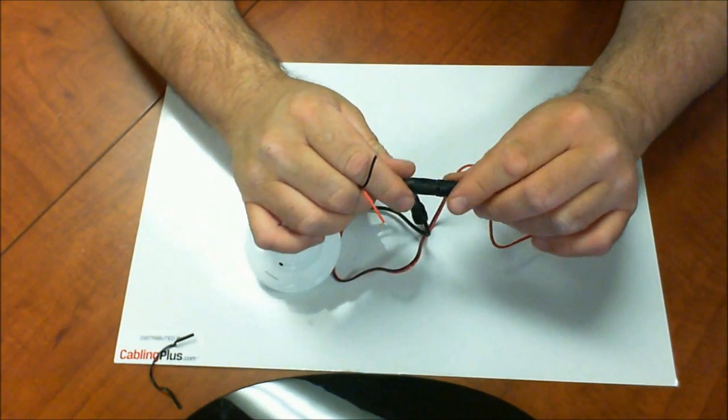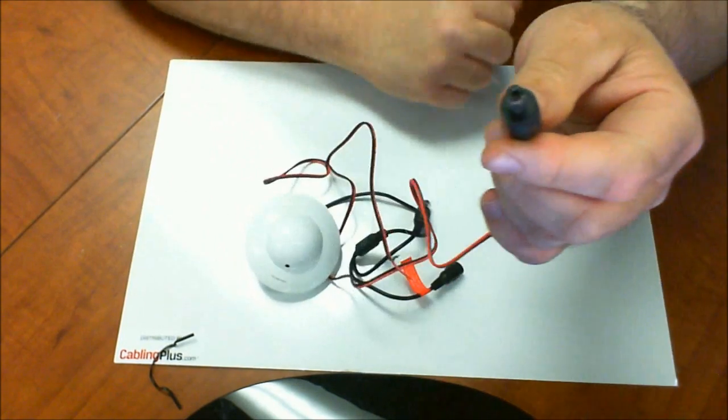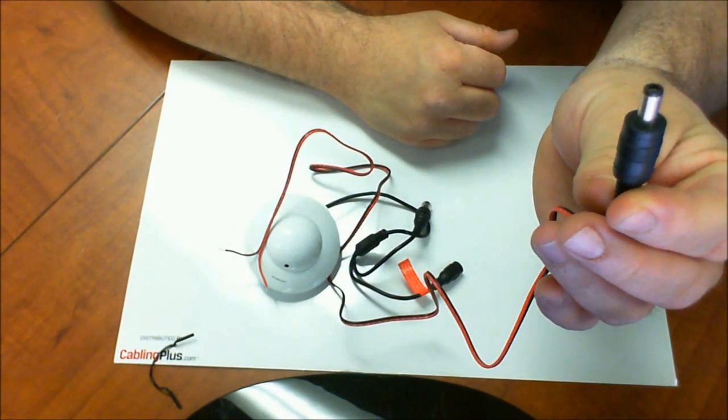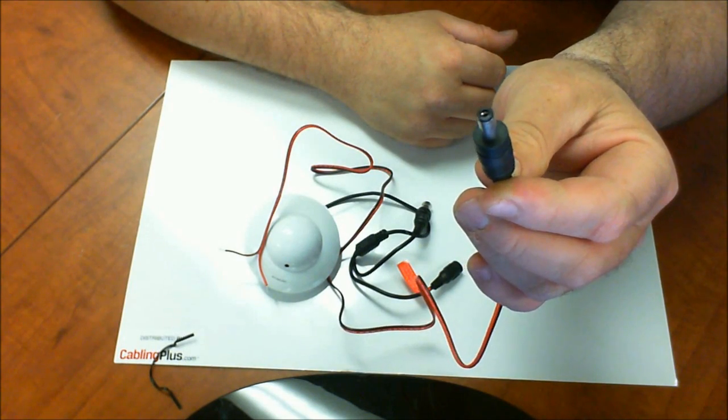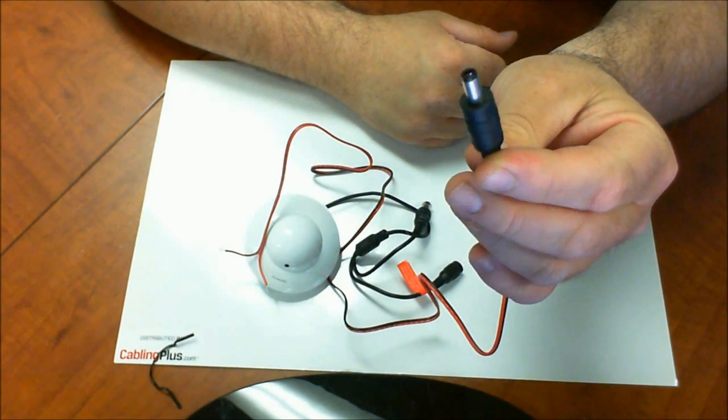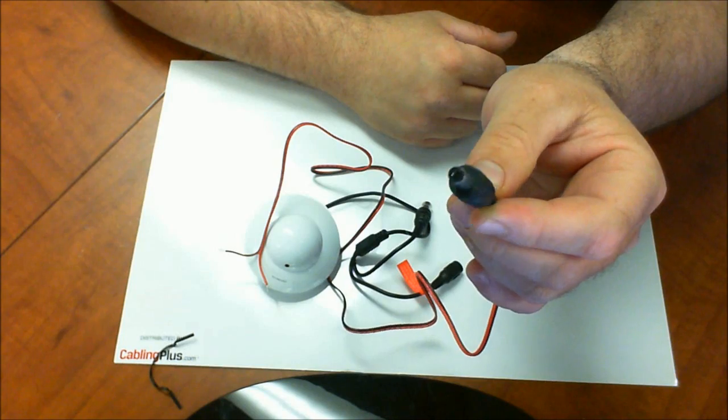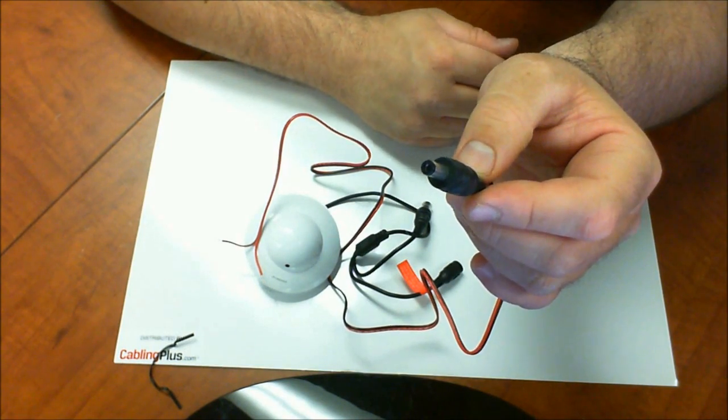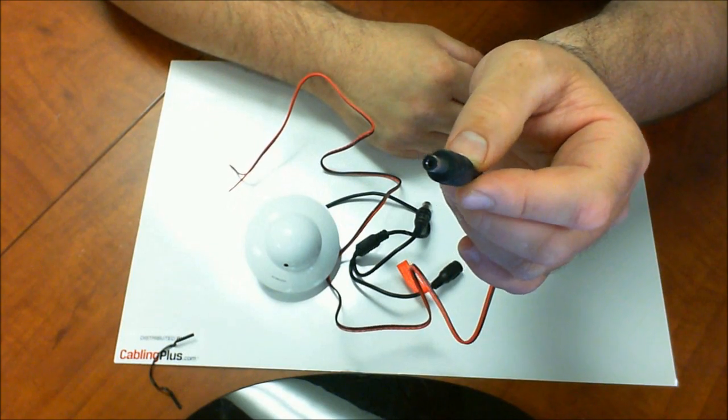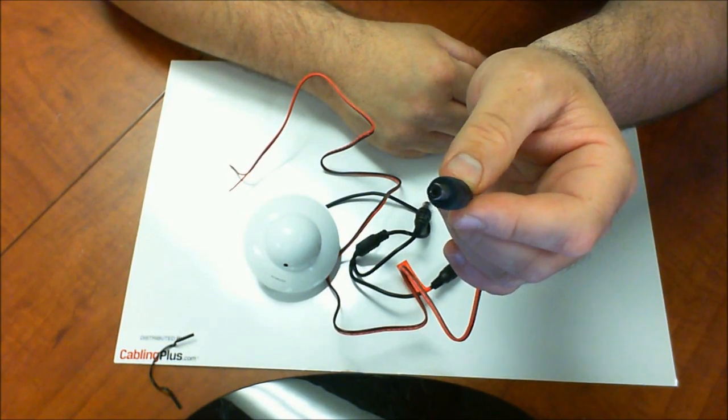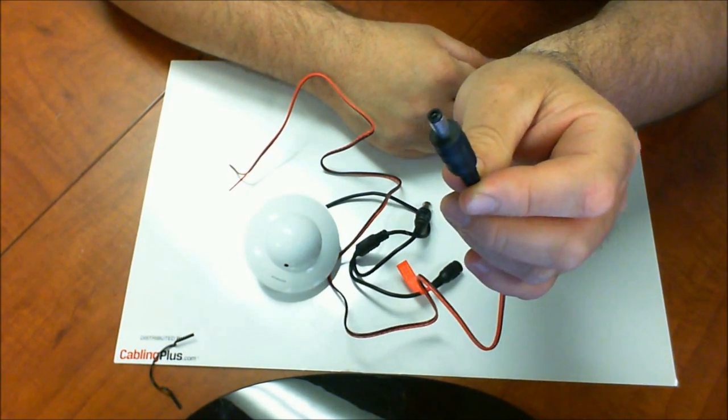And you can also use these, these pigtails come in female and male. So you can use the male side on the opposite side of the cable, at the DVR side or your head end side. You can use the female version to plug into a small DC power adapter, or you'll just use the raw cable if you're going to use like a multi-camera power supply.